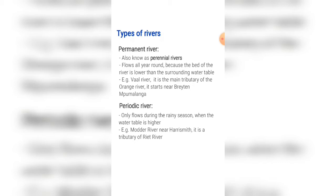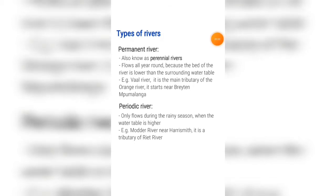A permanent river, also known as a perennial river, flows all year round because the bed of the river is lower than the surrounding water table. The example is the Vaal River. It is a main tributary of the Orange River and it starts near Breyten in Mpumalanga.